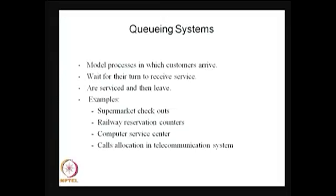How can one define a queuing system? You can see many examples: whenever you go to the supermarket to get some items, or you see the railway station counters, or a computer service center with many PCs and printers. The queuing system is also seen in call allocation in telecommunication systems. In all those examples, something is getting served and then leaves the system.